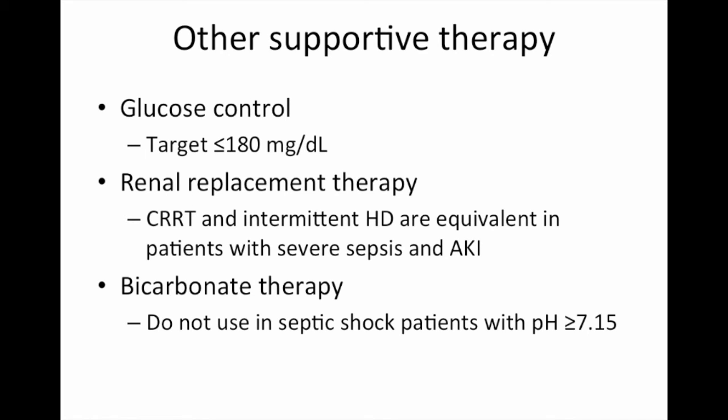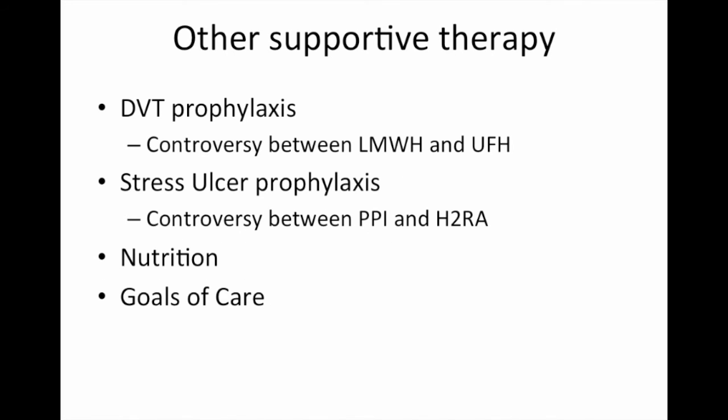Glucose control current targets are around 180 or less. Do not routinely use bicarbonate in patients if their pH is greater than 7.15. DVT and GI prophylaxis in appropriate patients is important, as is nutrition. Focusing on goals of care, as in every critically ill patient, is also important.